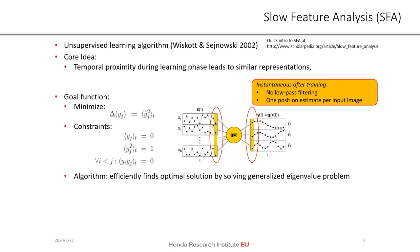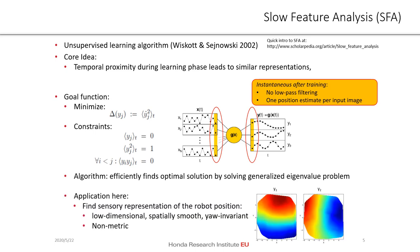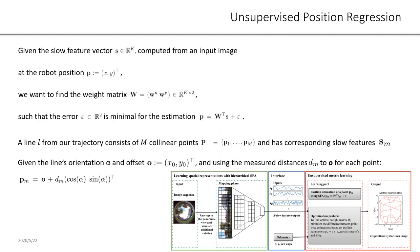The algorithm efficiently finds the optimal solution by solving a generalized eigenvalue problem. Our application here is to find sensory representations of the robot position which are low-dimensional, spatially smooth, and orientation invariant, but not metric. You see two examples on the right: Y1 encodes the robot position in the north-south direction and Y2 in the orthogonal east-west direction. Under ideal conditions, the SFA representations may already encode the robot position in 2D very nicely, but practically it will also contain other environmental information, and this representation is certainly not metric.